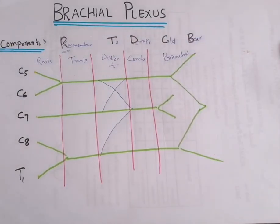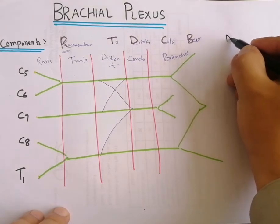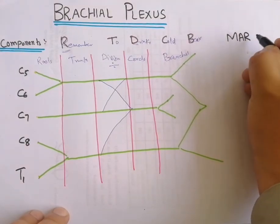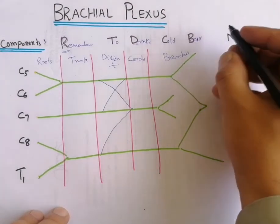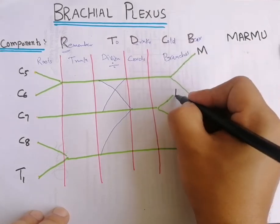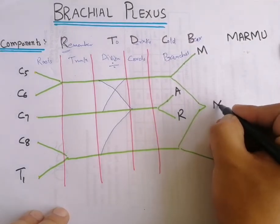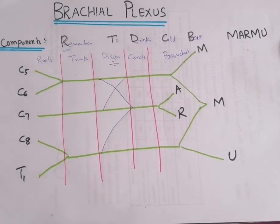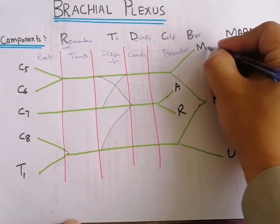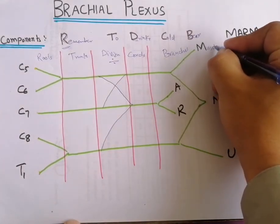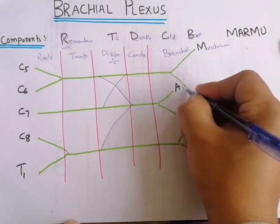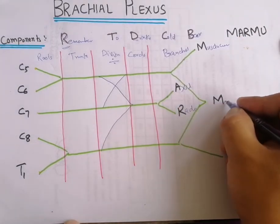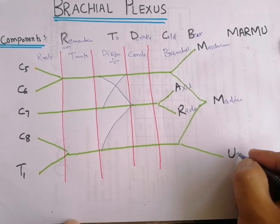The terminal branches can be remembered with the animal mnemonic MARMU: M is for musculocutaneous nerve, A is for axillary nerve, R is for radial nerve, M is for median nerve, and U is for ulnar nerve.